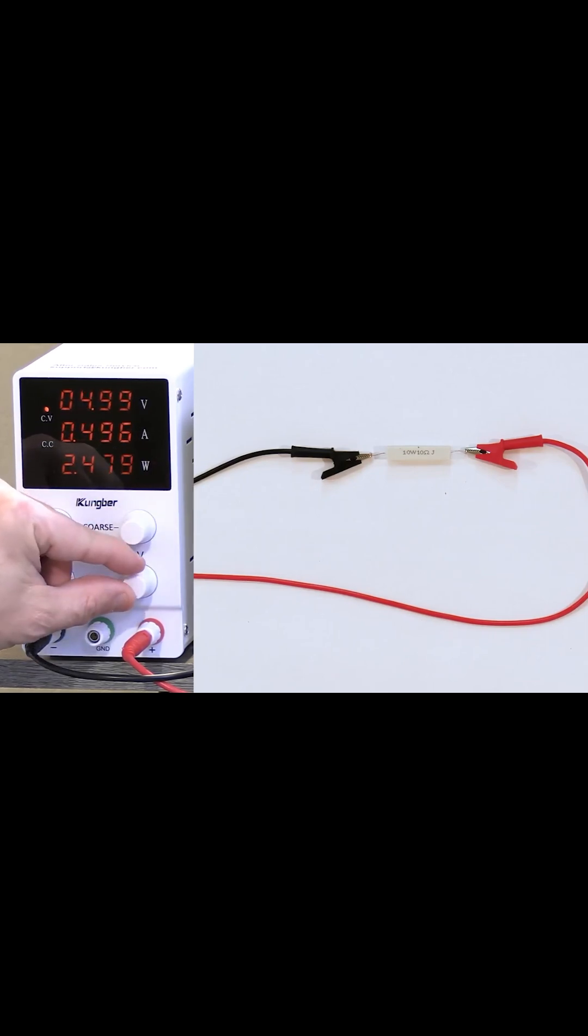So what I'm going to do is dial in my supply. It's hard to get it exactly, this particular supply, to exactly 5.00 volts. So I'm going to leave it here at 5.01 volts.